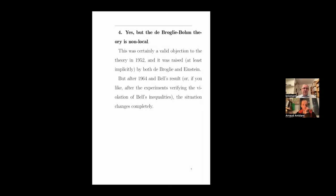Yes, but the de Broglie-Bohm theory is non-local. This was certainly a valid objection in 1952, and I think it was raised, at least implicitly, by both de Broglie and Einstein. But after Bell's result — after the experiments verifying the violation of Bell's inequalities — the situation changes completely. In videos two and three, we explained that EPR-Bell reasoning shows that nature is not local, regardless of the truth of quantum mechanics. Therefore, the non-locality of the de Broglie-Bohm theory is a quality, not a defect. If this theory were local, it would be refuted by EPR-Bell reasoning.